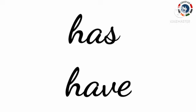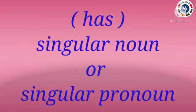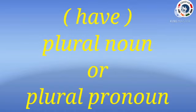Has and have show that the thing belongs to somebody. Children, 'belongs to' means to be owned by somebody. We use has when we mention about one person — that means a singular noun or singular pronoun in the present tense. And we use have when we mention about more than one person — that means a plural noun or plural pronoun in the present tense.